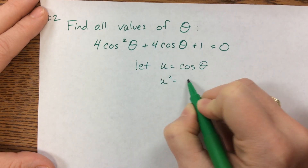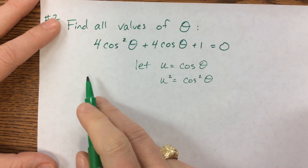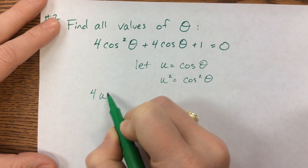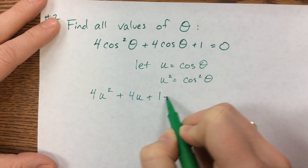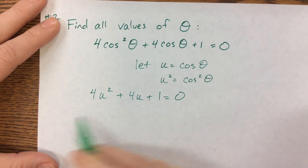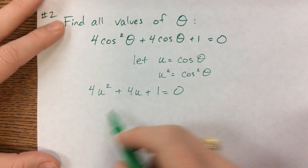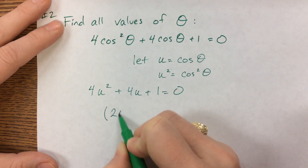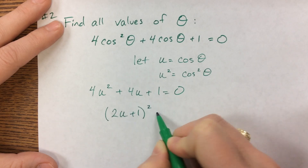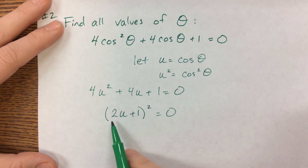Therefore, u squared would be cosine squared. So I can rewrite this and say, well, this is 4u squared plus 4u plus 1 equals 0. And this is something that's a little easier for me to factor. And this factors to (2u + 1) quantity squared. Let's see — yes, yes.